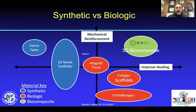When you look at synthetics for biologics and allograft tissue, you want to increase mechanical reinforcement and improve healing. Depending on the types of products you use, orthobiologics may increase healing but don't necessarily increase mechanical reinforcement. Allografts are right in the middle. Something like the BioRes 3D composite has both mechanical reinforcement and healing improvement.